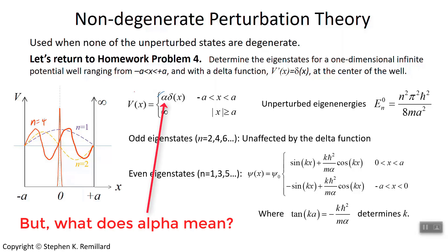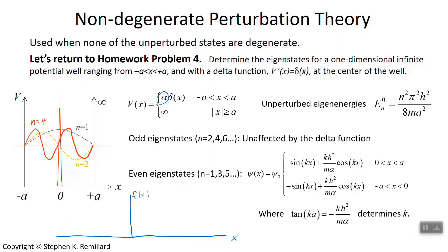Let's take a minute to understand the meaning of alpha — the strength of the delta function. Delta goes to infinity at x equals 0, so what does it mean to have strength? If I had a function f of x that is 0 up until the origin and then it's a step of height alpha, and I took the derivative of f with respect to x, at x equals 0 you have a delta function times alpha. So alpha is the height of a step function whose derivative is alpha times delta of x — if you integrated the delta function, you'd have a step function of height alpha.